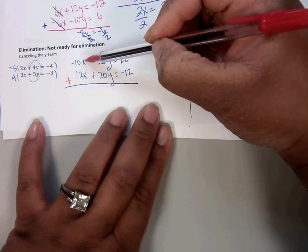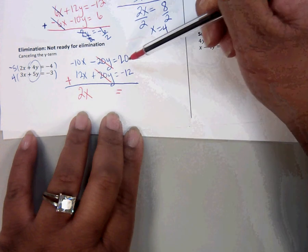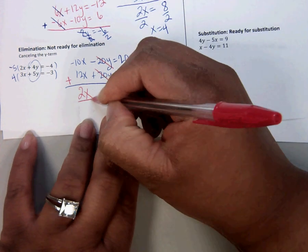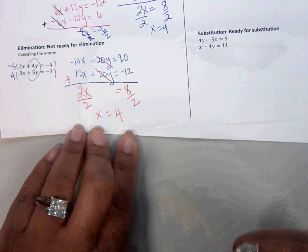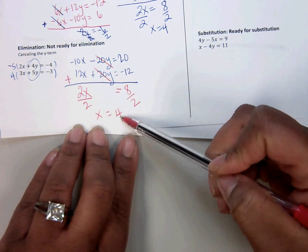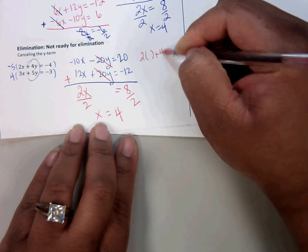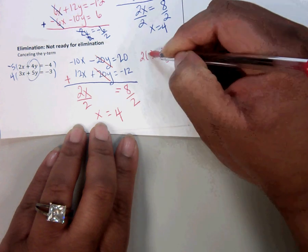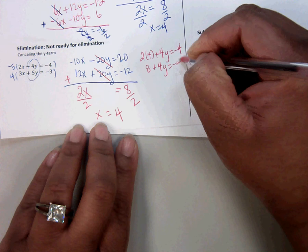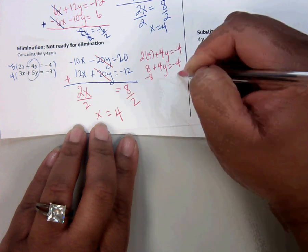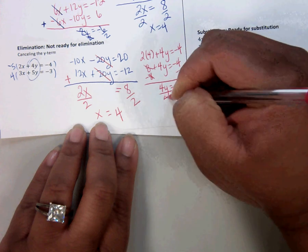Now we add. And a negative 10x plus 12x is 2x. And it cancels. 20 minus 12 is 8. And x equals 4. Now we take 4 and we plug it in. 4y equals negative 4. The 4 goes here. And 8 plus 4y equals negative 4. Subtract our 8 on both sides.